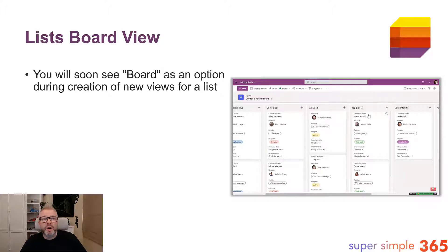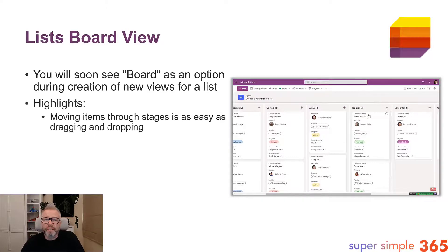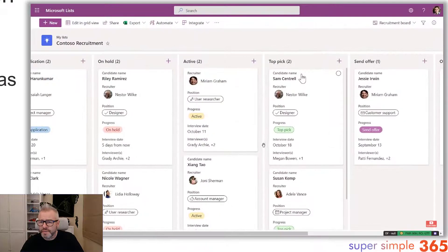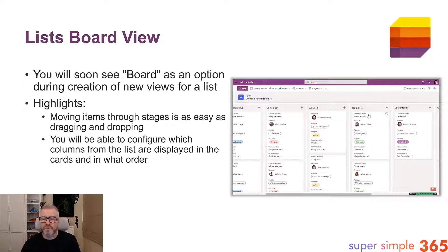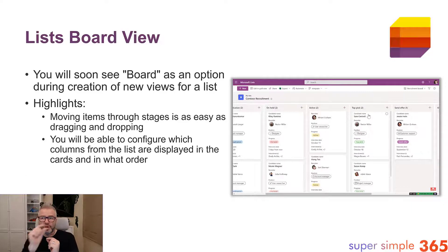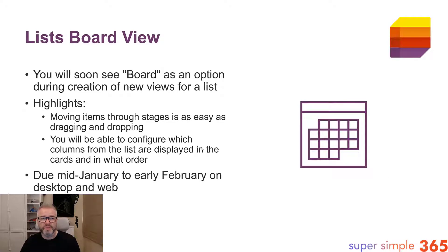What have we got for Lists? It's the new board view. You will soon see board as an option when creating new views for your list. This at first glance just reminds me of Planner — I use Planner day in, day out. You can just drag items through different stages with drag and drop, which looks really nice. You can configure which columns from your list are displayed as cards and in what order, similar to how Planner lets you choose what appears on the card.